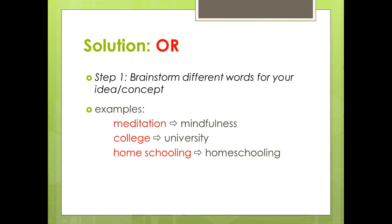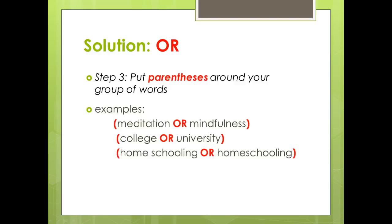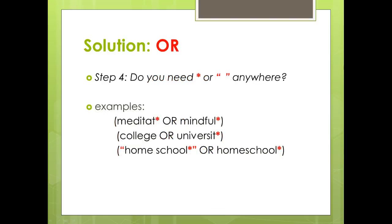To use OR you need to take a couple of steps. The first step is to brainstorm different words for your idea or concept. For example, meditation could be mindfulness; college, university; homeschooling as two words and homeschooling as one word. You want to put the word OR between each one of your options. Then, a very important step — put parentheses around your group of options, identifying the group you're giving the database. You're saying you need to find a match on meditation or mindfulness, college or university, homeschooling two words versus one word. You can also add in the asterisk symbol or quotation marks anywhere you think is appropriate.